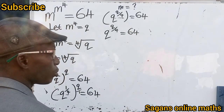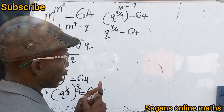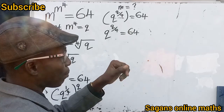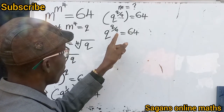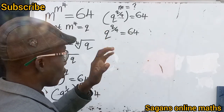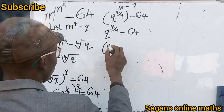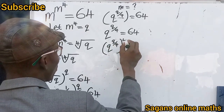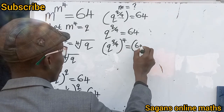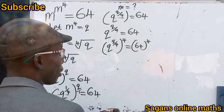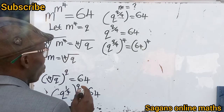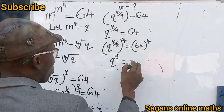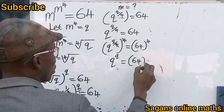The denominator of the exponent is 4. To remove it, we multiply both sides by 4. This gives us q raised to the power of q equals 64 raised to the power of 4.